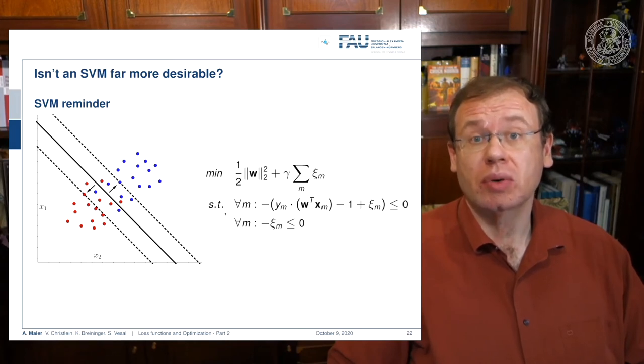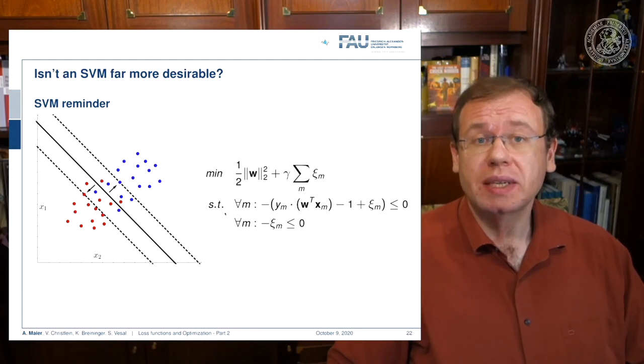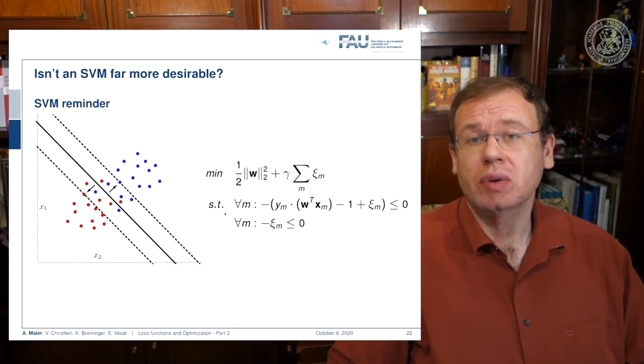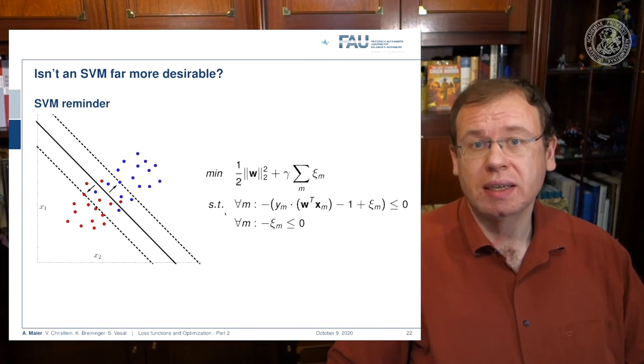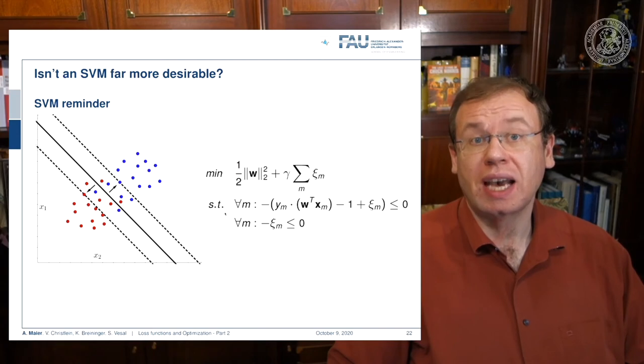This means that I can take individual points and move them back to the decision boundary if they were incorrectly classified. To limit excessive use of xi, I postulate that the xi are smaller or equal to zero. Furthermore, I postulate that the sum over all the xi needs to be minimized, as I want to have as few misclassifications as possible.